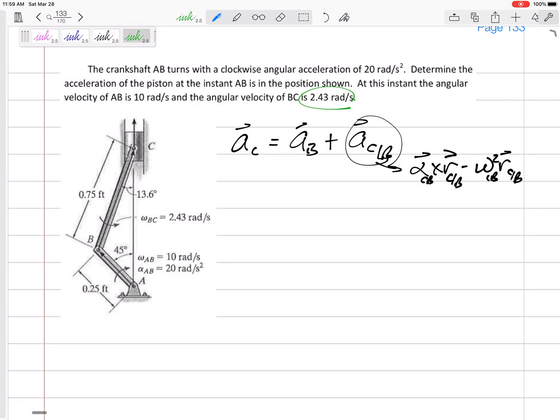And so that 2.43 they gave us right there. And so we can use this method. Now, why would we use this method? You see that we're using this method for bar BC.